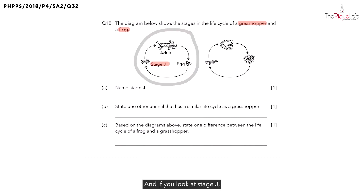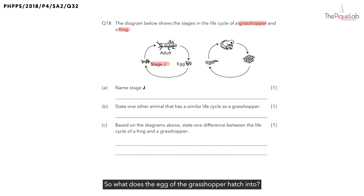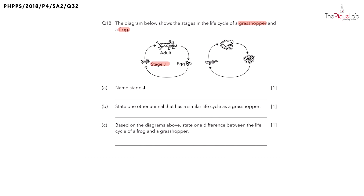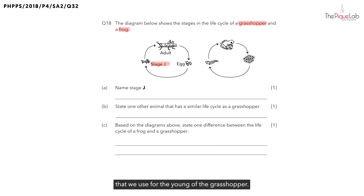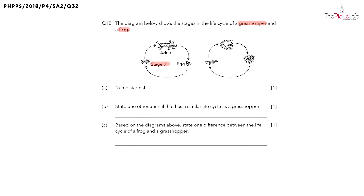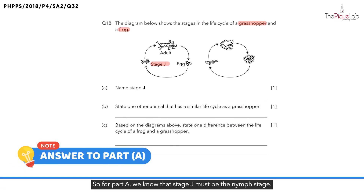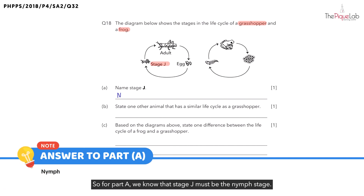If you look at stage J, it is what the egg hatches into. What does the egg of the grasshopper hatch into? There is a specific word we use for the young of the grasshopper — it is the nymph stage. So for part A, we know that stage J must be the nymph stage.